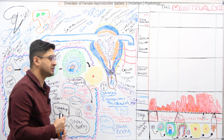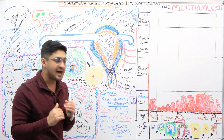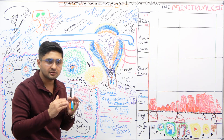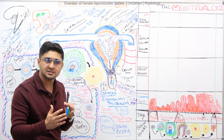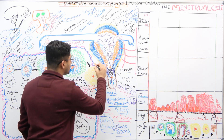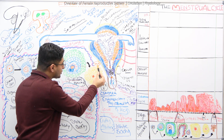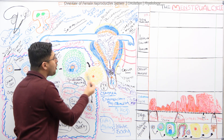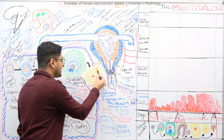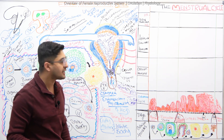The corpus luteum produces progesterone. It keeps producing progesterone for about 10 to 12 days. After that, it needs a hormonal signal to continue — that hormone is human chorionic gonadotropin (hCG), released from the placenta after fertilization. The hCG signals the corpus luteum to keep producing progesterone. If the corpus luteum does not receive hCG signals after 10 to 12 days, it degenerates.